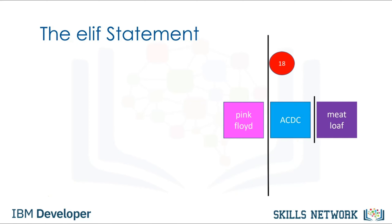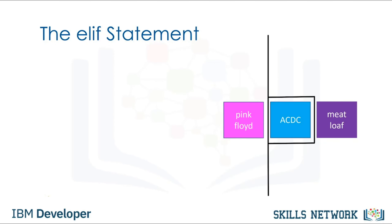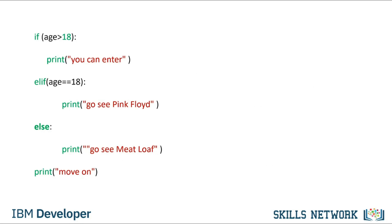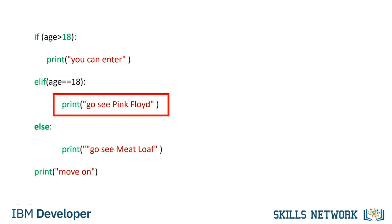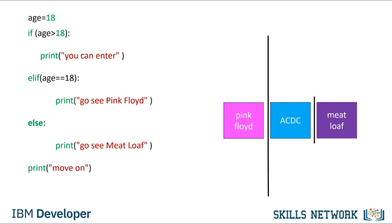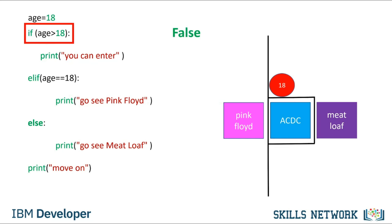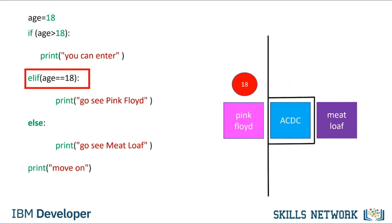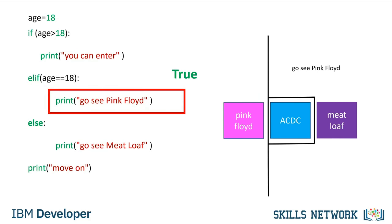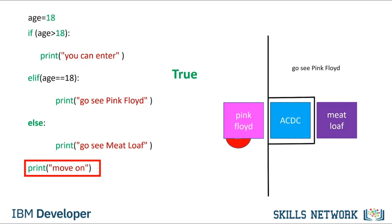A person 18 years of age enters the area — they are not over 19, so they cannot see ACDC. But as they are 18, they attend Pink Floyd, then move on. The syntax of the ELIF statement is similar — we simply add the statement ELIF with the condition, then add the expression to execute if the statement is true, with an indent. An 18-year-old enters: they are not older than 18, so the condition is false. The ELIF condition is checked and is true, so we print 'go see Pink Floyd', then move on.